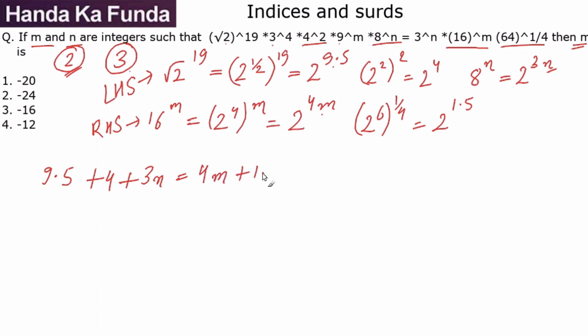And this gives me the overall equation as—so this is 3n. If I take it to the other side, this will become 4m minus 3n. My variables on one side.